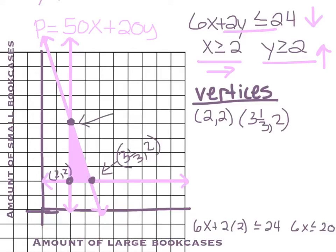And then this point right here, it looks like it crosses at 2, 6. We can verify that by plugging in a 2 for x. 6 times 2 plus 2y less than or equal to 24. So 6 times 2 is 12. 24 minus 12 is 12. 2y is less than or equal to 12, y is 6. So that point is going to be 2, 6. All right, we found our vertices and we wrote them down.